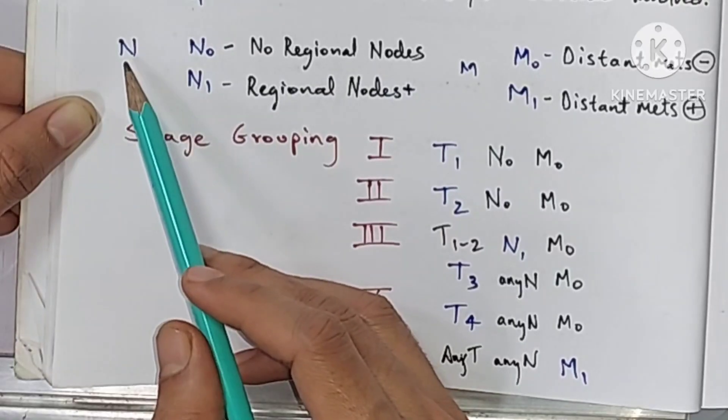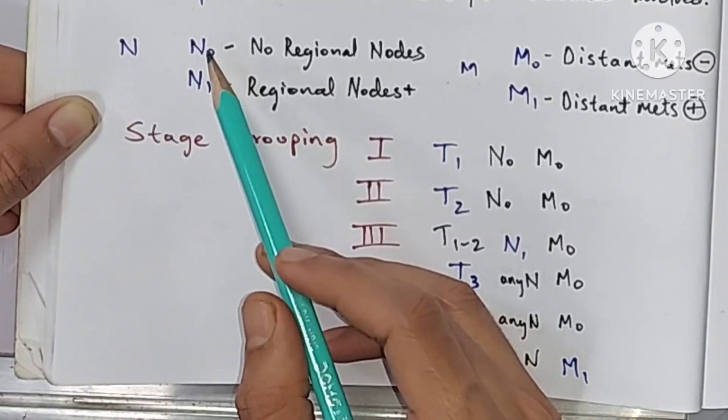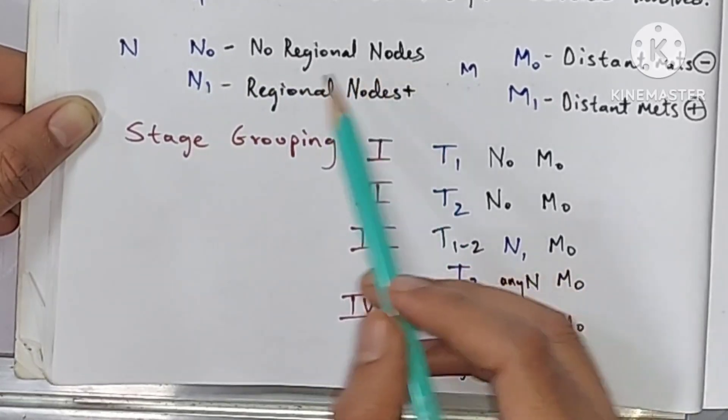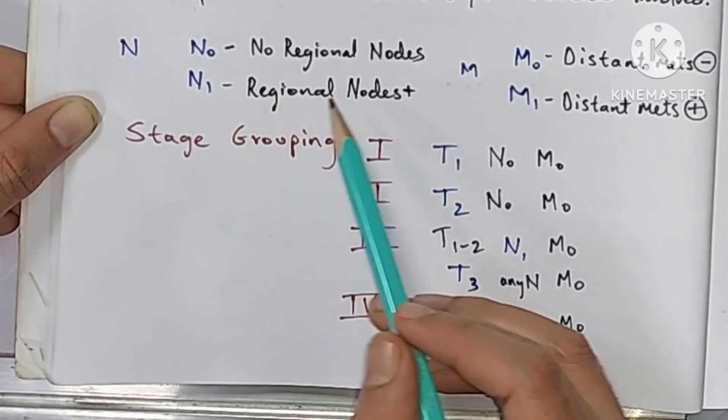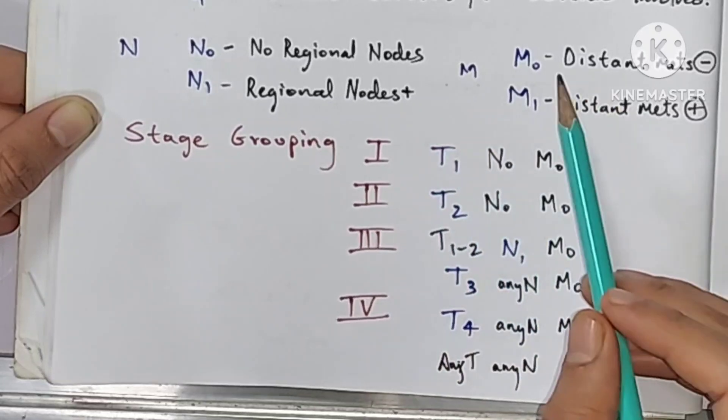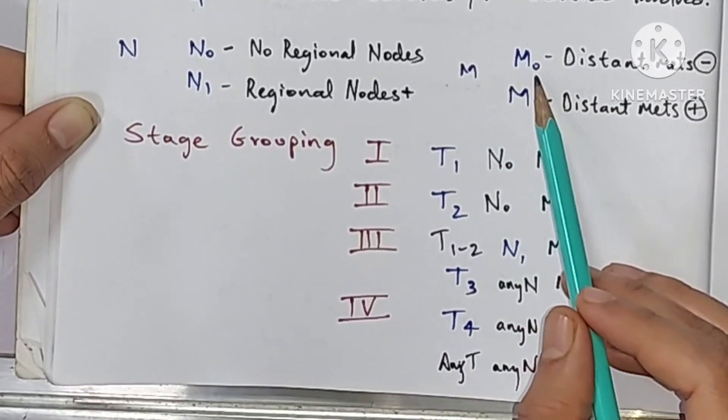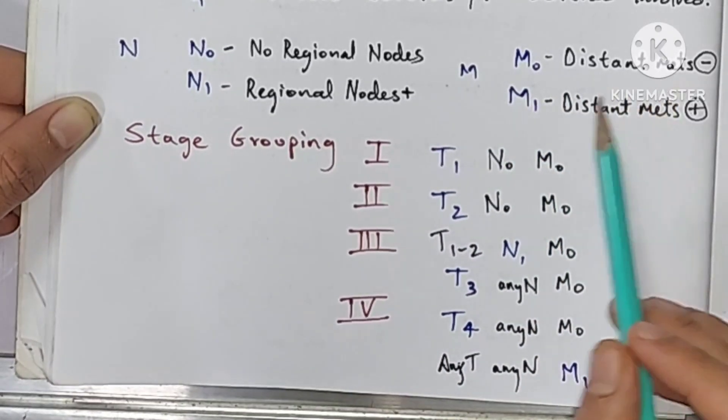Then we see nodal involvement. That is N0 when there is no regional nodes involvement. N1 when there is regional nodes involved. Then metastasis, that is M0 when no distant metastasis present.